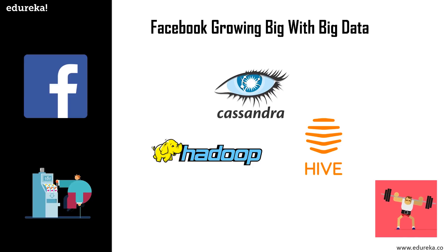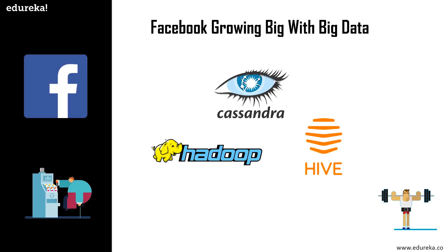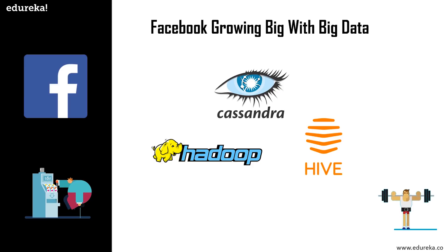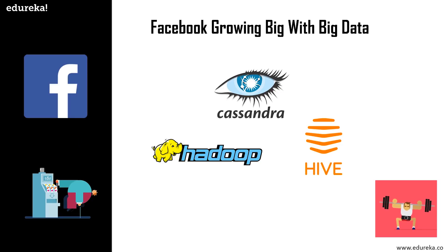The second major update was Cassandra. Traditional data storage units started lagging when Facebook's search team discovered an inbox search problem — developers faced issues storing reverse indices of messages sent and received by users. The challenge was to develop a new storage solution that could solve the inbox search problem. The objective was a distributed storage system dedicated to managing large amounts of structured data across multiple commodity servers without failing. This is when Cassandra was developed. Next, after Yahoo implemented Hadoop for its search engine, Facebook developed Hive so data scientists could store larger amounts of data in the Oracle data warehouse.